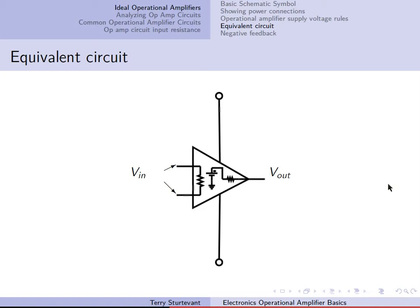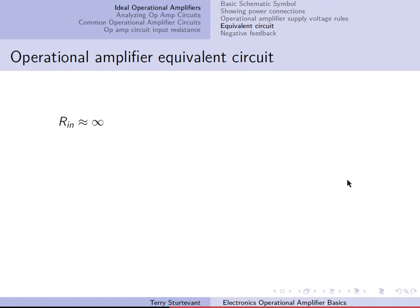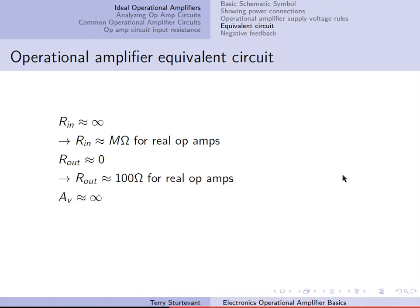Here's the equivalent circuit of an operational amplifier. There is a finite resistance between the two inputs, a voltage source, and some series resistance to the output. The input resistance is ideally approximately infinite — in fact, it's usually on the order of megaohms for real op-amps. The output resistance ideally is zero, but in fact it's on the order of 100 ohms for real op-amps. The voltage gain ideally would be infinite; in fact, it tends to be in the range of 10 to 100,000 for real op-amps. The output voltage is given by the voltage gain times the difference between the non-inverting input and the inverting input.